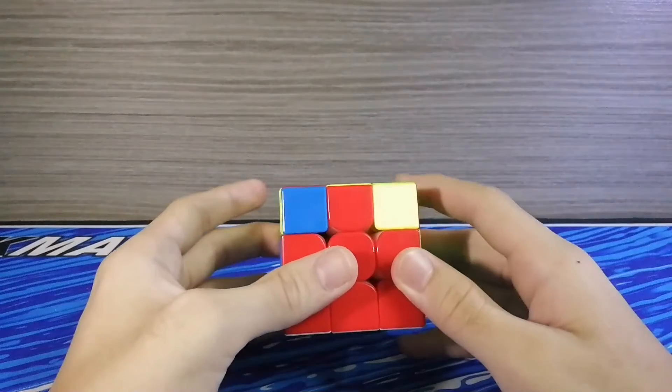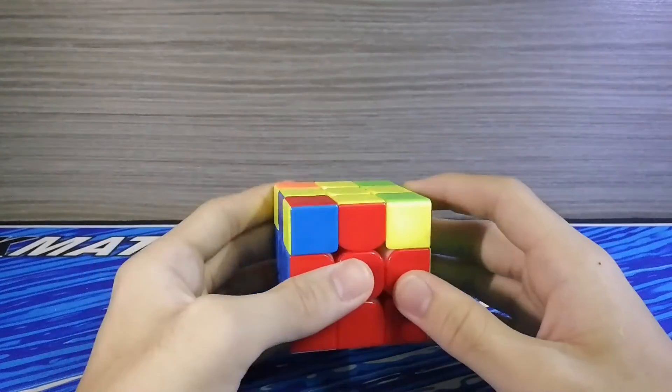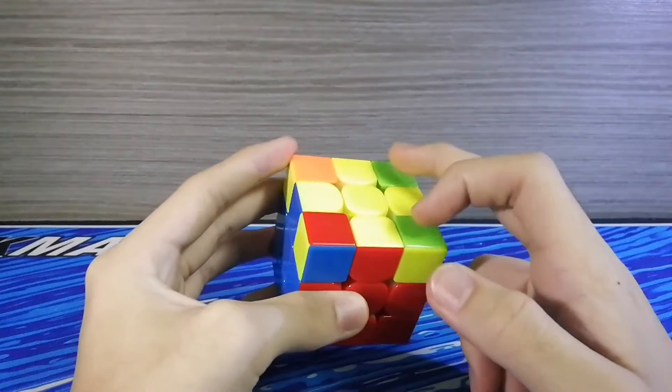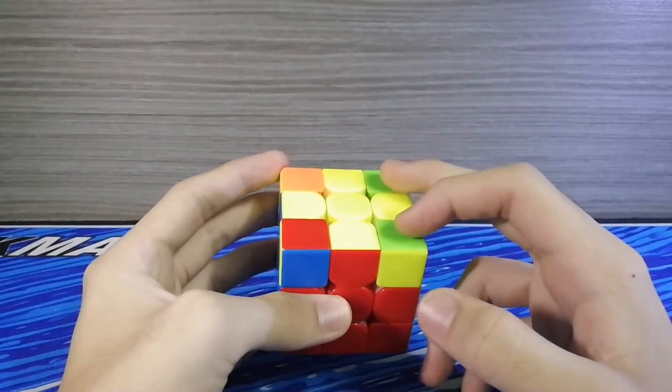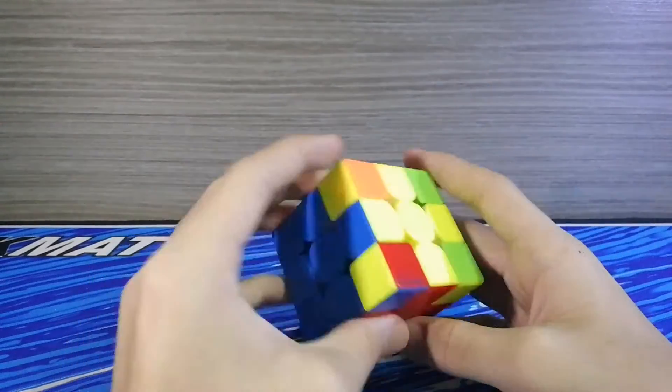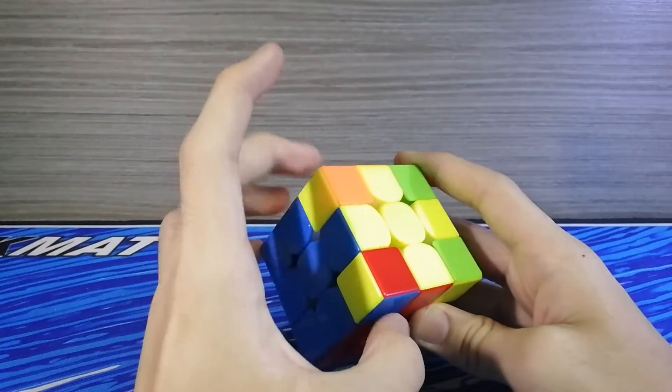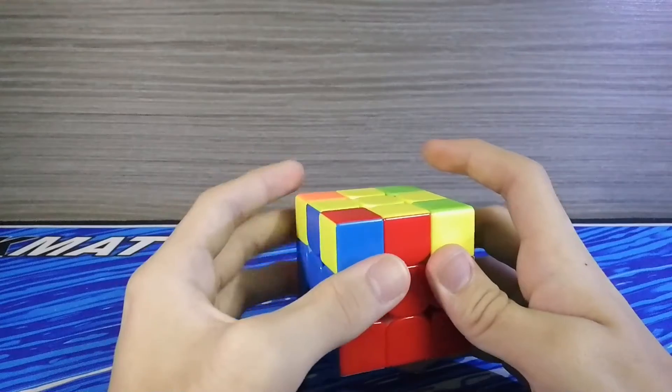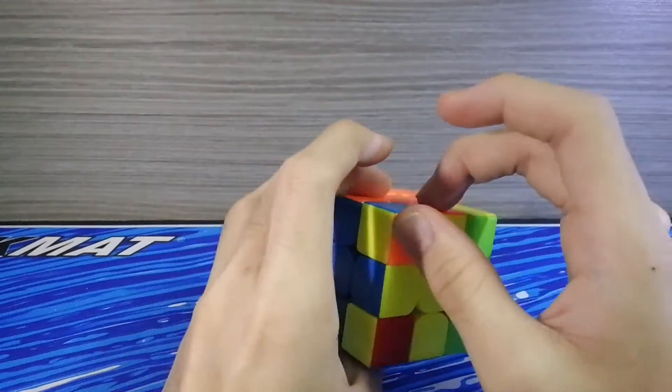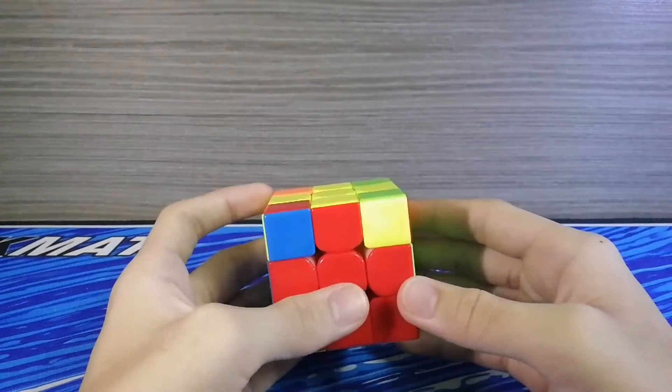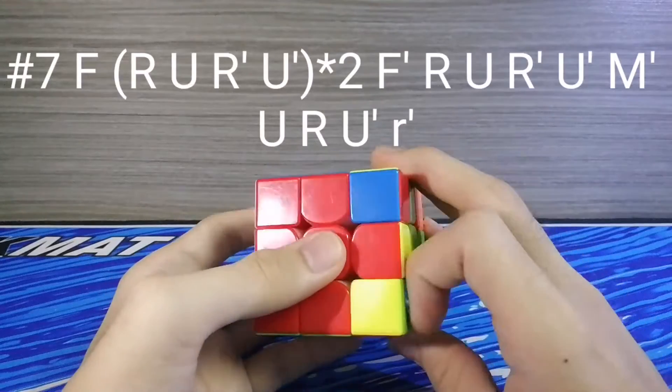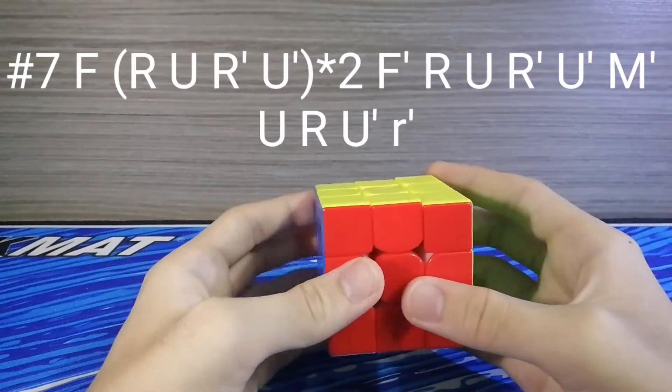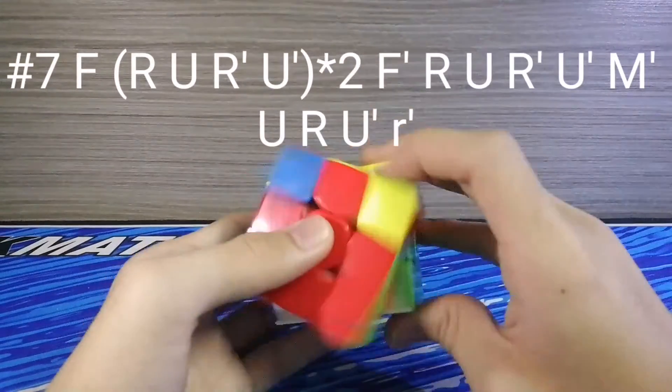Okay so here's the last ZBLO case. This is a Pi case with all permuted of course. How I memorize is this headlight here, this green sort of headlight is opposite of these two blue faces. And these two as well are the same. And here's the algorithm. And here's the algorithm fast.